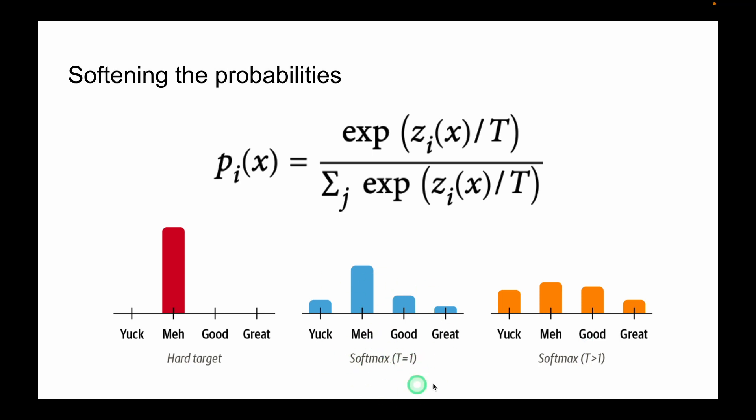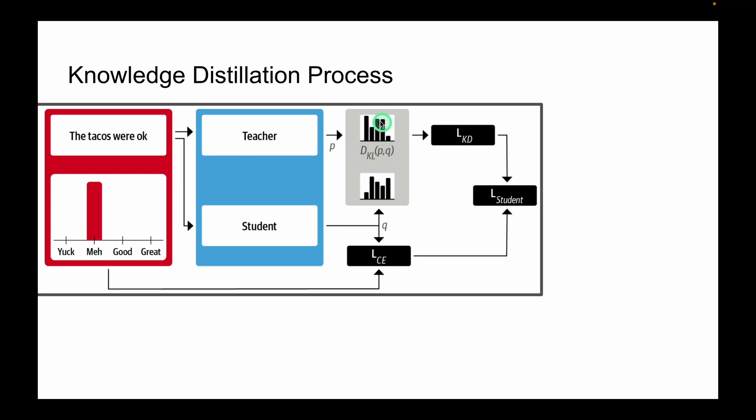Now let's see the entire Knowledge Distillation process and the entire overall architecture diagram. These are the probabilities which are outputted by teacher model and the student model. So teacher model takes an input, 'the tacos were okay' or any text sequence, and it produces probability distribution. Now these probabilities are softened.